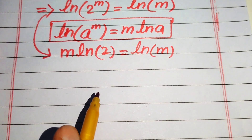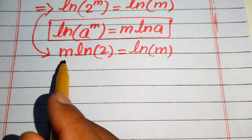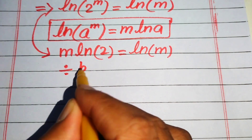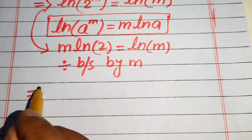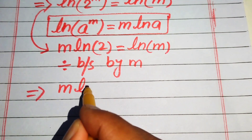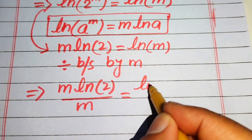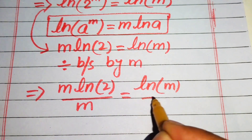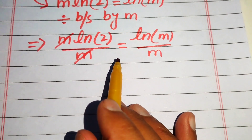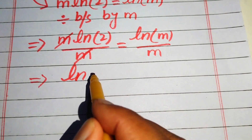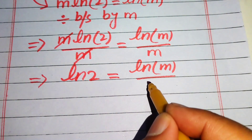Further, we need to move the variable term to the right-hand side. We eliminate m from the left-hand side by dividing both sides by m. When you divide both sides by m, the equation becomes m times log 2 divided by m equals log of m divided by m. The m cancels out, giving us log 2 equals log of m divided by m.